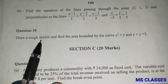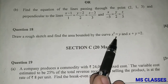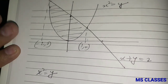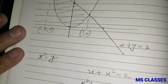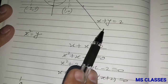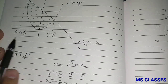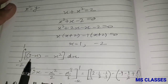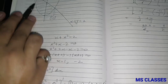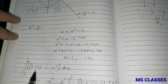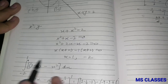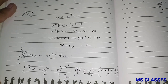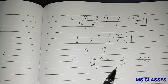Last question of Section B: find the area bounded by x² = y (parabola) and x + y = 2 (line). The intersection points are found at x = -2 and x = 1. The required area = ∫₋₂¹ [(2 - x) - x²] dx = [2x - x²/2 - x³/3] from -2 to 1. Substituting the limits gives the answer 9/2.